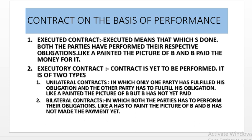Bilateral contract is one in which both parties have to perform their obligations. Like A has to paint the picture of B and B has not made the payment yet — both obligations are yet to be fulfilled.